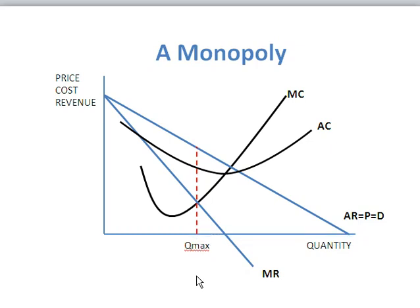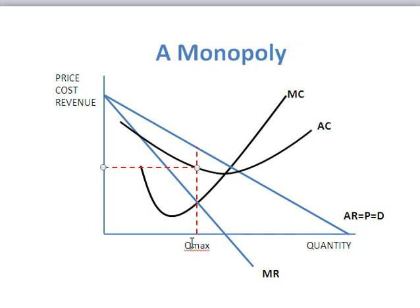Now, how do we find out the profit situation? We do it in a very similar way to the perfect competitor. The first thing we do is identify our costs. Our costs are going to be where the average cost curve coincides with Q max — the level of output — and we're going to label that CP.